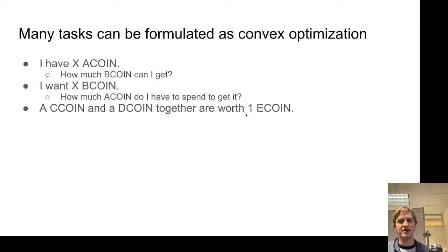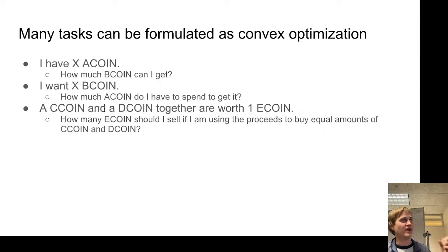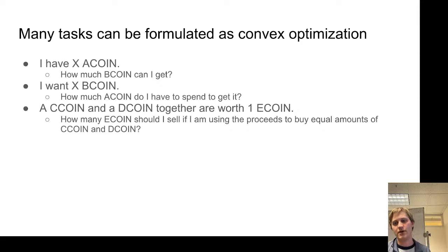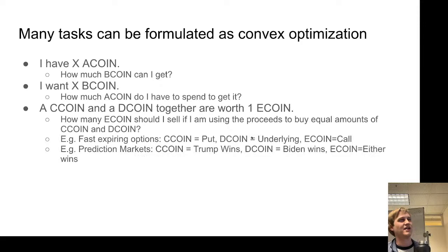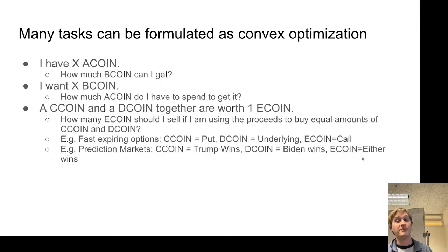Another version: suppose I have a belief about relative worths of certain coins — say C coin plus D coin equals E coin. There's a question of how many E coins I should sell if I'm using the proceeds to buy equal amounts of C coin and D coin. This is like an arbitrage opportunity. If there's some arbitrage where I can trade E coin and get more C coin plus D coin combinations, that's a good trade. Examples of financial assets like this include put options and call options — there's some discounting, but that's roughly true. There's also a prediction market explanation: C coin could be candidate one wins, D coin could be the other candidate, and E coin could be one dollar.